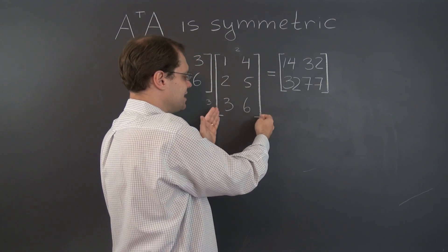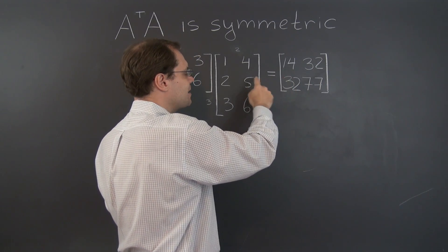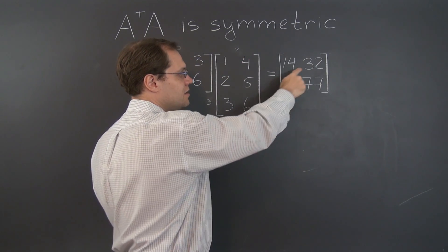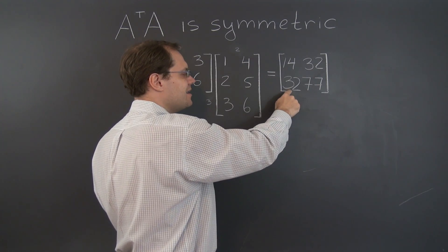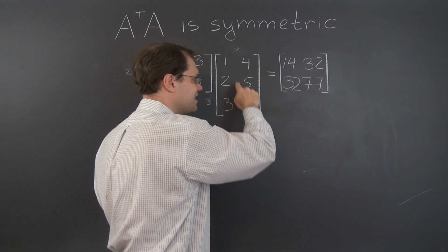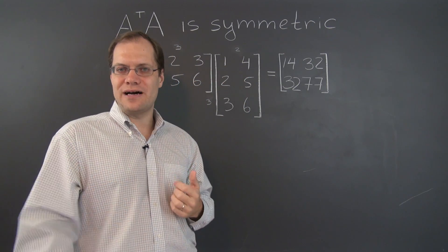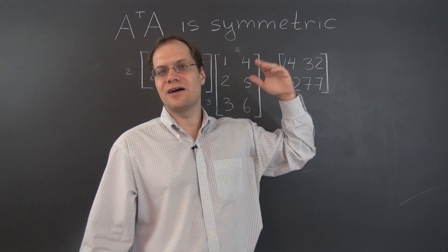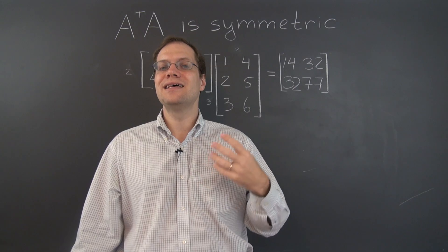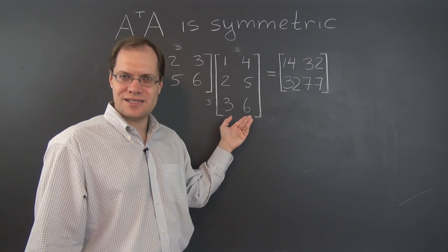We can simply look at A and state that these entries are the dot products of the first column and the second column. Except this one will be the dot product of the first column and the second column. And this will be the dot product of the second column and the first column. And of course the dot product doesn't care about the order. So predictably these two numbers are the same.